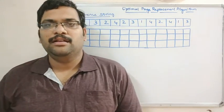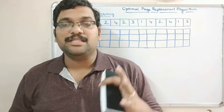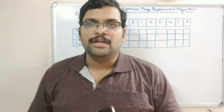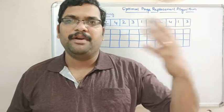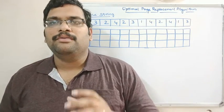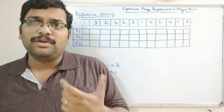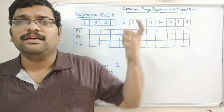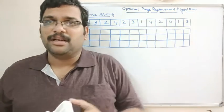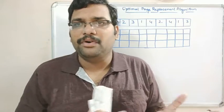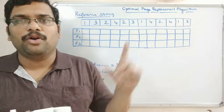Hello friends, welcome back to our channel. In the previous session we covered the LRU page replacement algorithm — the least recently used algorithm. To load a required page from secondary memory to main memory, we need to find free space. If all memory frames are full, we replace one page. Which page to replace depends on the page replacement algorithm. We've already covered FIFO and LRU, and today we'll see the optimal page replacement algorithm.